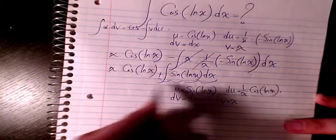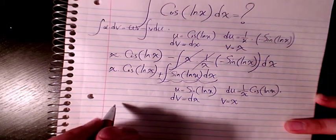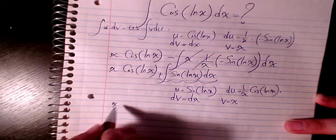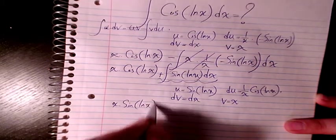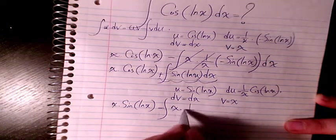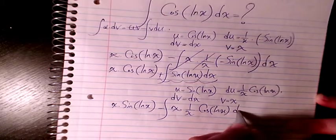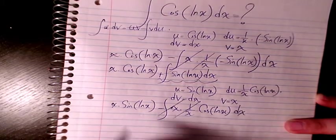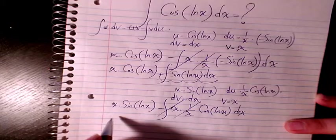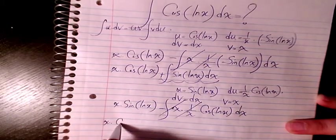So I will have u times v, which is x times sine ln x, minus v du. x times 1 over x cosine ln x. These two cancel out. The answer will be so far x times cosine of ln x.